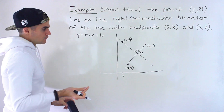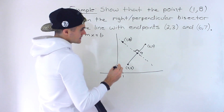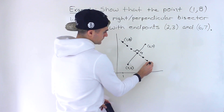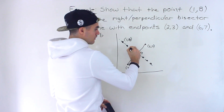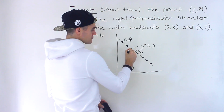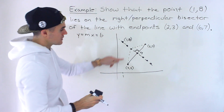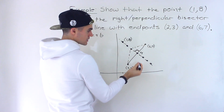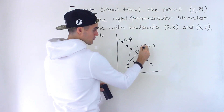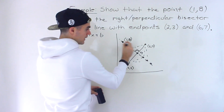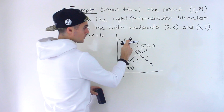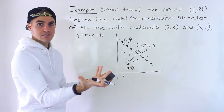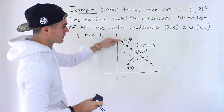Another way is to think about it: any point that lies on the perpendicular bisector will always have the same distance to both endpoints of the line, because it cuts it in half at 90 degrees. So another way you can do this is find the distance between (1, 8) and (6, 7), and the distance between (1, 8) and (2, 3). If they're the same distance, that confirms that the point (1, 8) is on the perpendicular bisector.